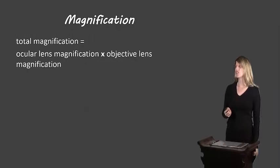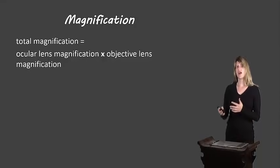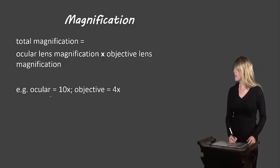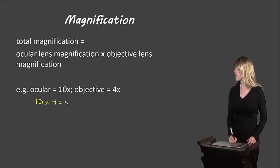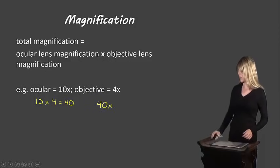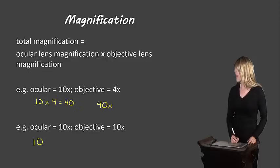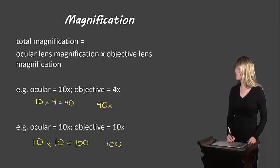Let's start off with magnification. Total magnification is the magnification of the ocular lens times the magnification of the objective lens. For example, if the ocular lens is 10x and the objective is 4x, 10 times 4 gives us 40 — so the total is 40x magnified. In another example, if the ocular lens is 10x and the objective lens is also 10x, 10 times 10 gives us 100, so the total power is 100x magnified.